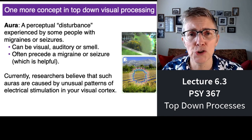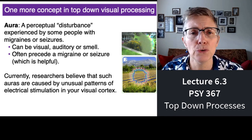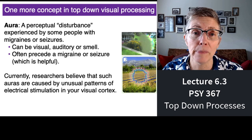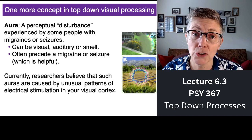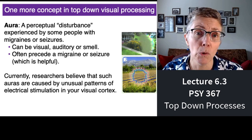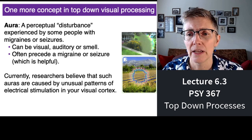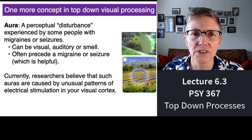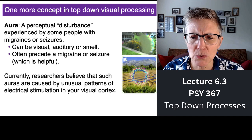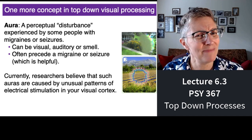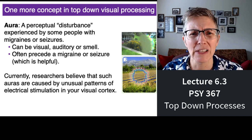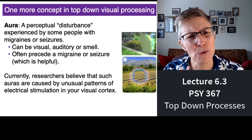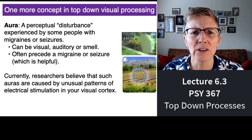Auras are not necessarily visual — though I've given two visual examples here — but they could be auditory or smell-based. Currently researchers believe that auras are produced by some sort of unusual pattern of electrical stimulation in the brain that occurs right before a migraine or a seizure.